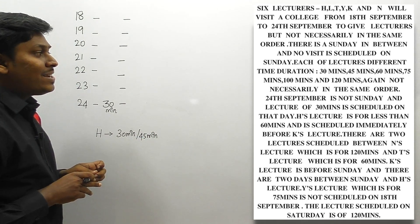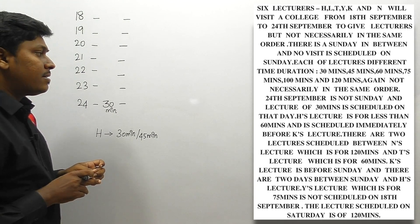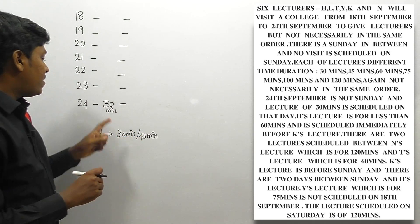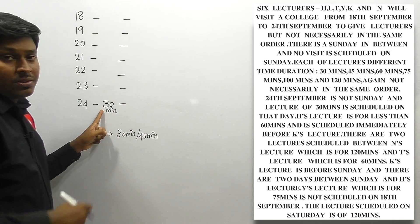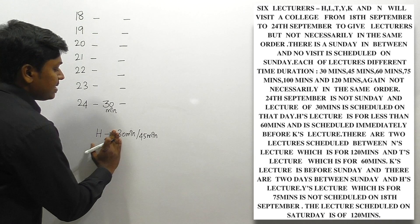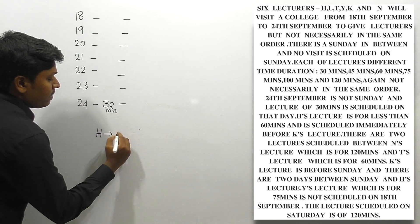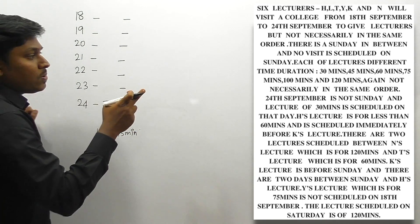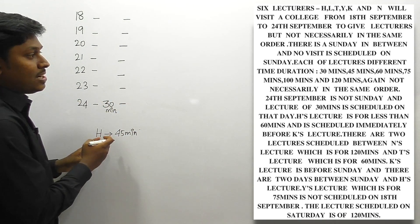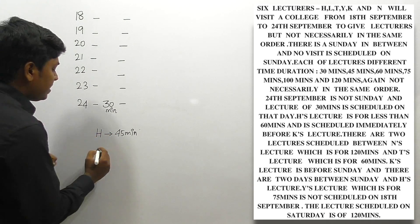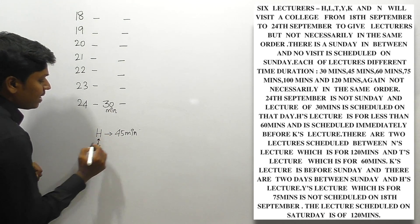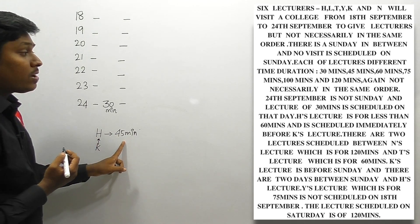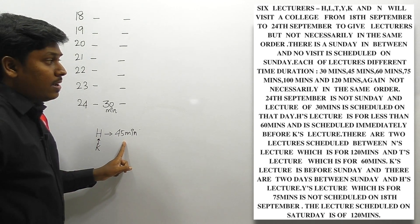H's lecture is scheduled immediately before K's lecture. Since 24th September already has the 30-minute lecture and K must come after H, we cannot place K after 24th. Therefore, H must be the 45-minute lecture, and K is placed immediately after H.